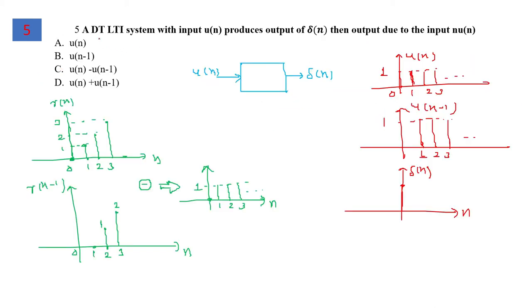For question number 5, a discrete time LTI system with input u(n) produces output δ(n). What is the output for input nu(n)? Consider the LTI system where we input u(n) and get output δ(n). We can observe that δ(n) equals u(n) minus u(n-1), meaning the system takes one time delay and then subtracts it. This is the system property.